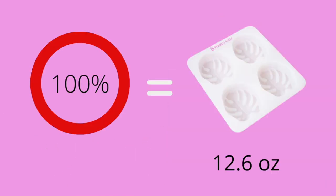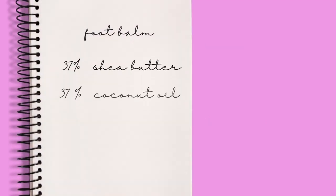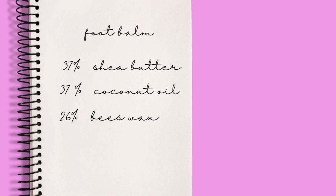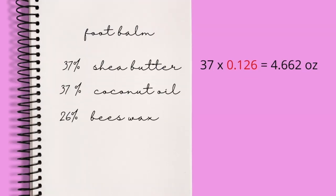Let's see another example. This particular mold holds 12.6 ounces. In this case, our 100% is 12.6 ounces. We divide 12.6 by 100 and we get 0.126 ounces as our 1% of the recipe. Now we take our first ingredient for this foot balm recipe, which is shea butter at 37%: 37 times 0.126 ounces, resulting in 4.662 ounces.